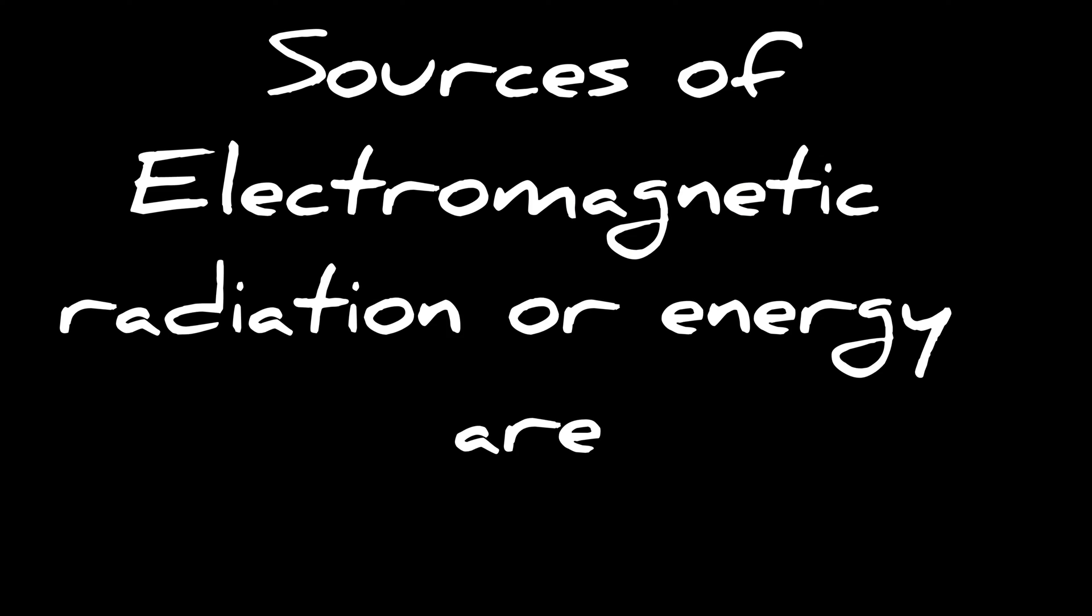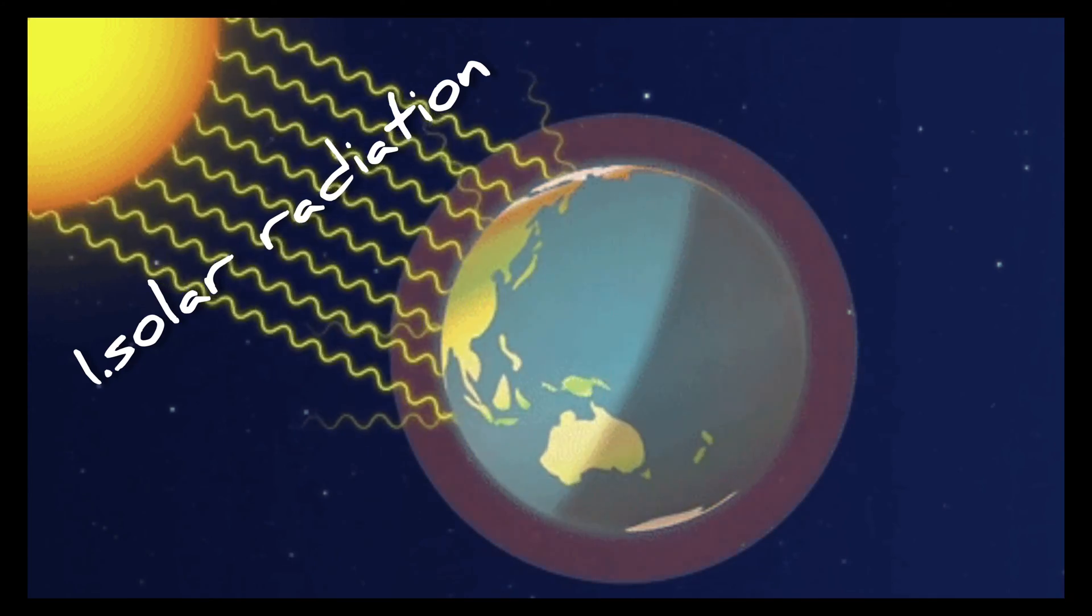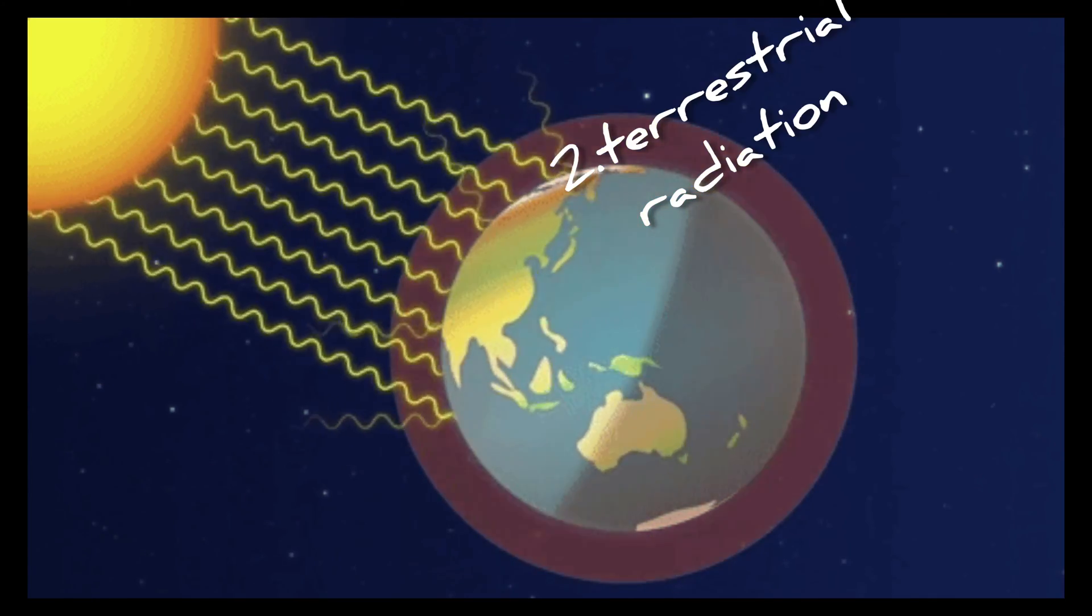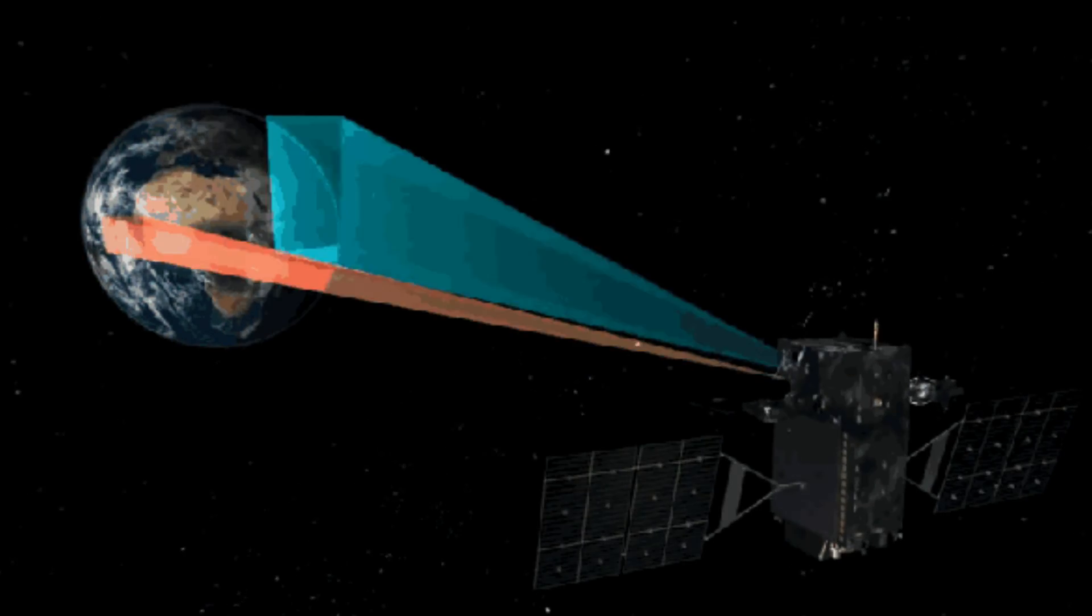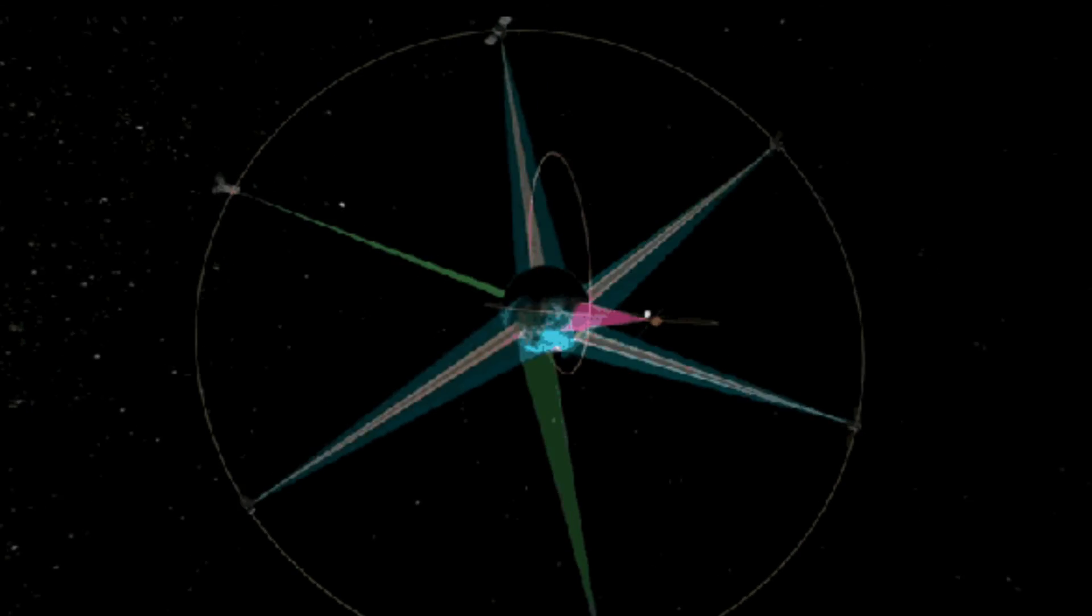Sources of electromagnetic radiation or energy are solar radiation or natural radiation that originates from the sun, terrestrial radiation or natural radiation emitted by the earth's surface, and artificial radiation originating from a remote sensing system.